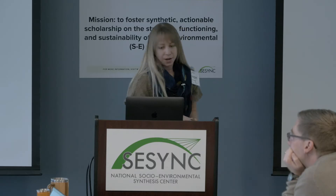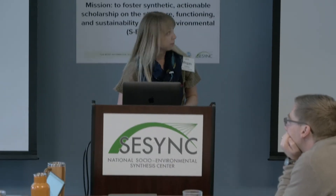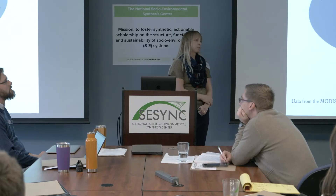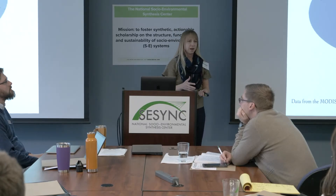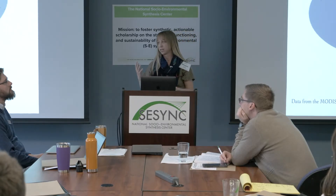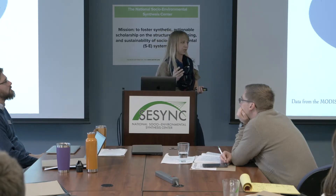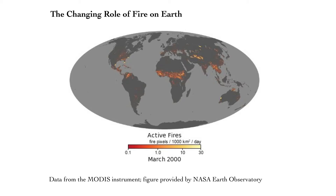We know that the role of fire on Earth is changing. Although fire disturbance has been present for millennia, fire regime characteristics are changing worldwide, mostly in tandem with land use land cover change and with climate change. Fire has been increasing specifically in size and in frequency in many parts of the world since the mid-1900s, and even more so toward the end of the century and in recent times. These changes have implications for ecosystems and for human health.